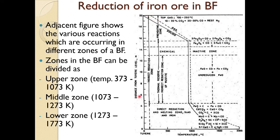This diagram shows distance from the tuyere level, where combustion occurs, up to the top where charge material is loaded. In the top stack region, gas temperature is around 250°C, but it can range from 100 to 250°C. In this region, free moisture and chemically bonded moisture get evaporated, and Fe2O3 (hematite) is reduced to magnetite.